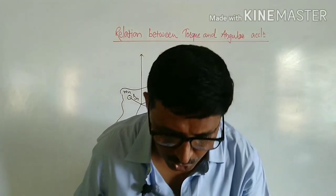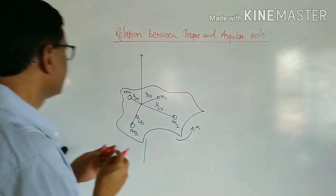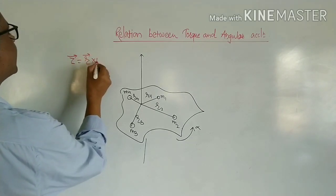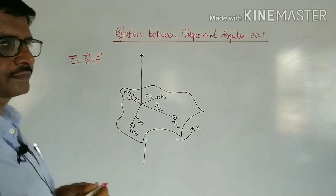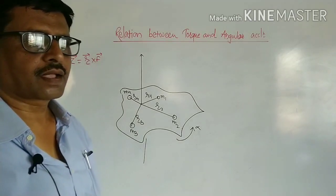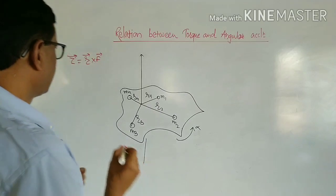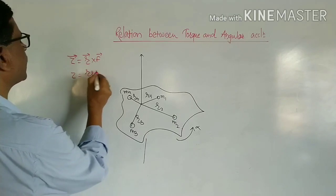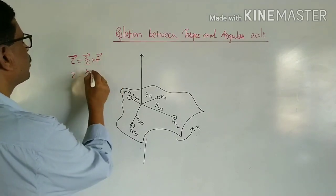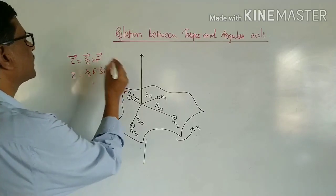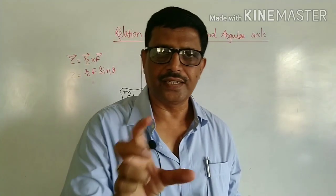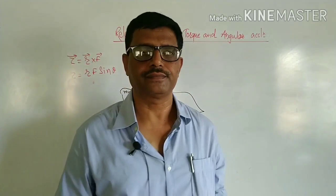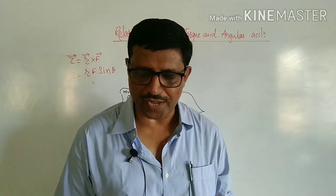Therefore, the torque acting on a rotating body is given by: torque is equal to vector r cross vector F. The magnitude of the torque acting on the rotating body is r into F into sine of angle theta, where theta is the smaller angle between the line of action of force and the perpendicular distance from the axis of rotation.